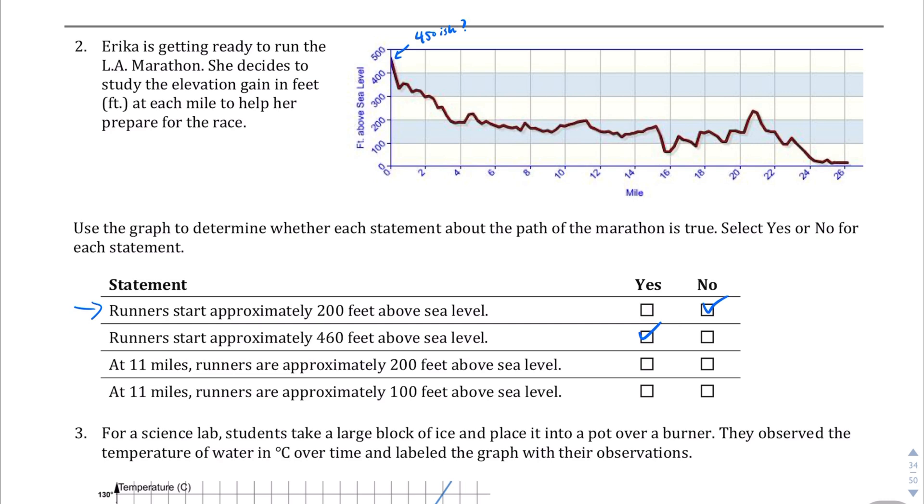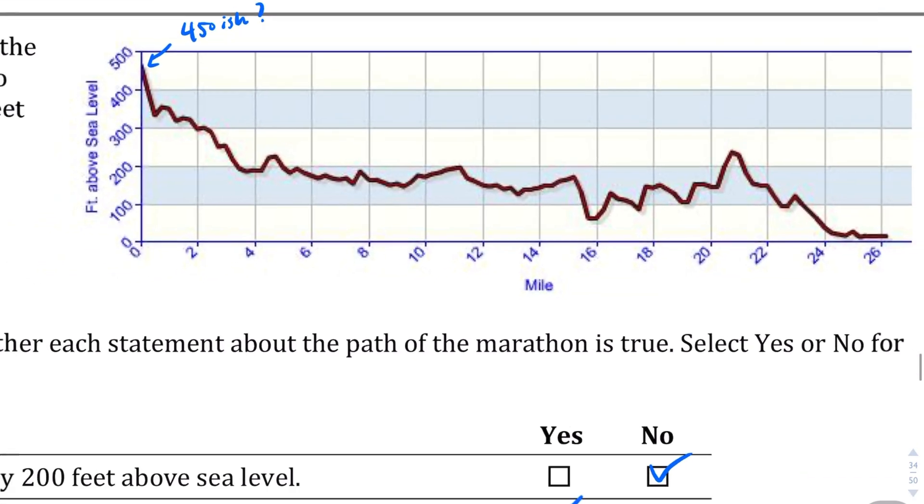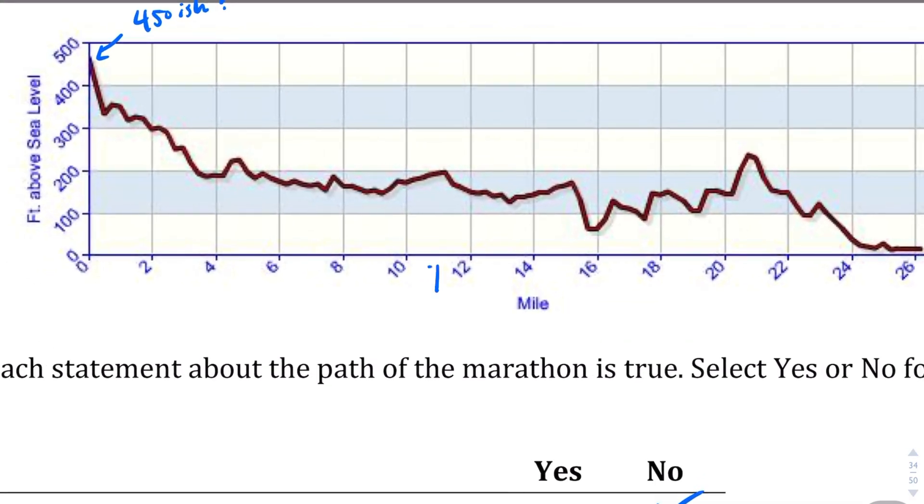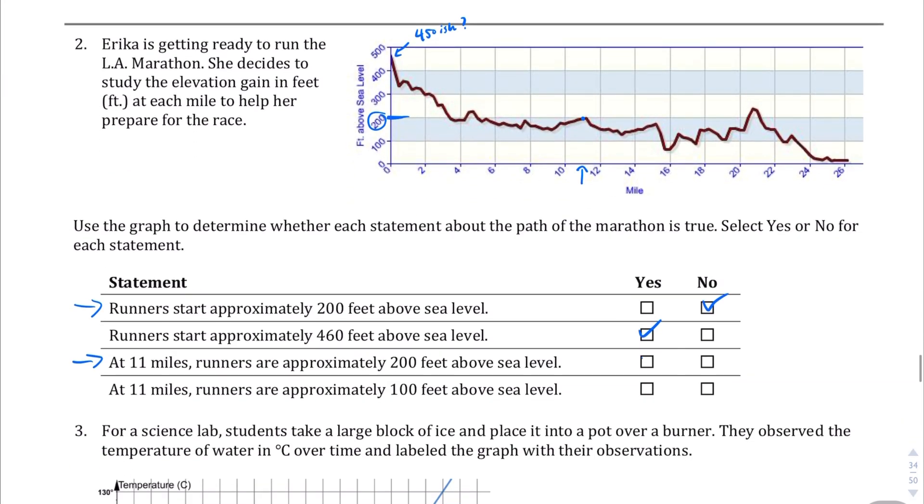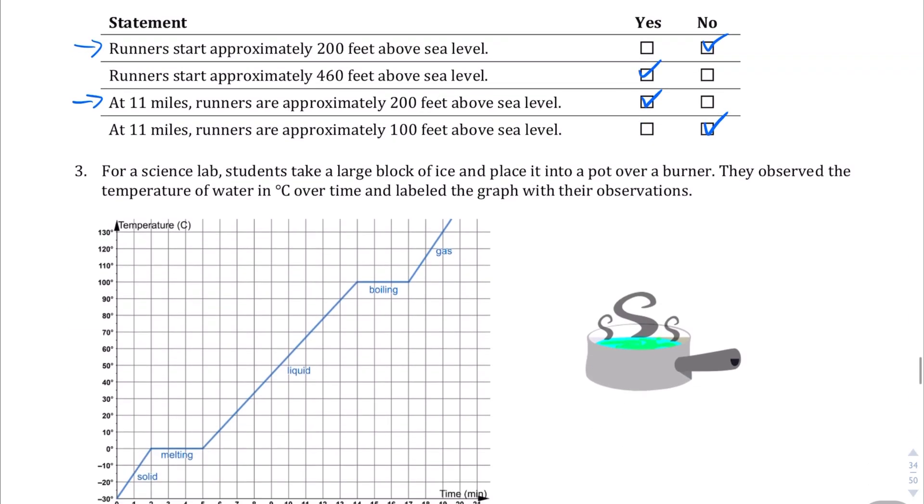Runners start approximately 460. Yeah, 460 makes sense. I said 450 but 460 is probably more accurate. Next statement: at 11 miles runners are approximately 200 feet above sea level. Let's take a look. 11 miles, we're about right there. Is that about 200? Yeah, looks right to me. The 200 line is right here, so I'm going to say yes. At 11 miles approximately 100 feet? No, we just established it's 200 miles, so the answer is no.